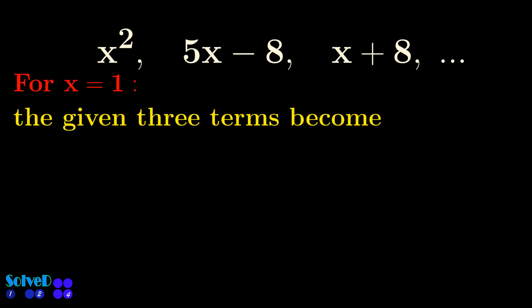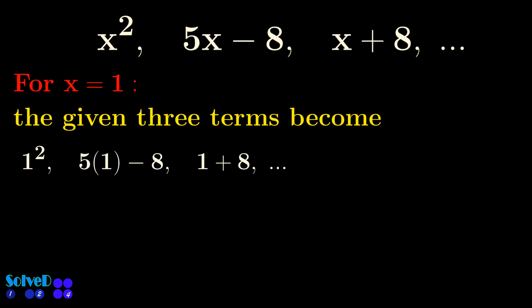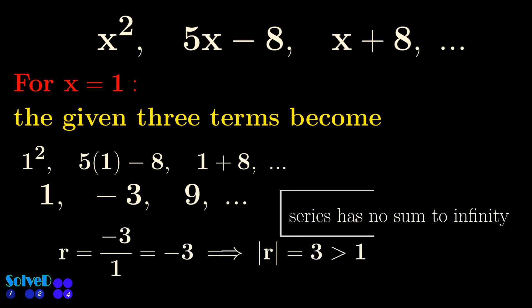For x equals 1, the given three terms become: 1, -3, 9. Since the value of r is greater than 1, sum to infinity does not exist. In other words, if we add all terms of the series, the answer keeps growing and no finite value can be obtained.